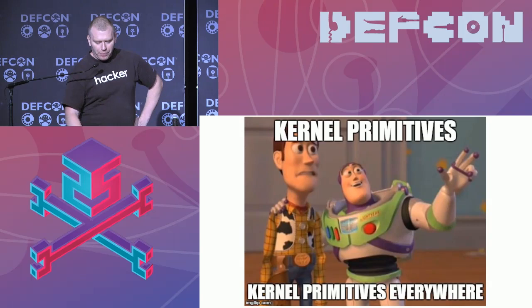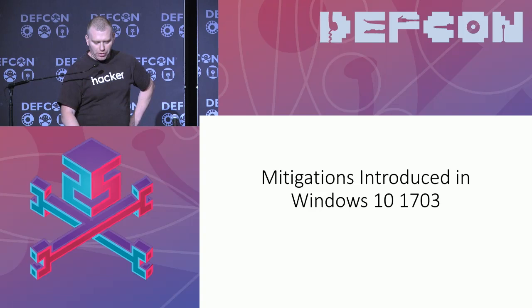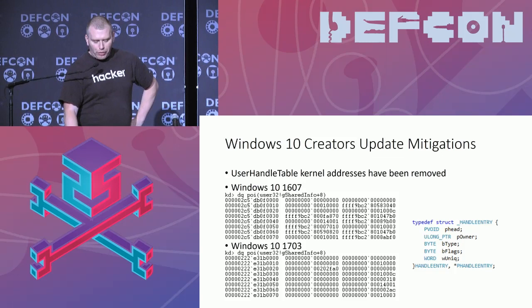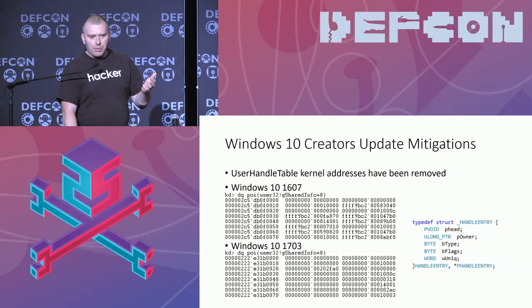That's what was put in the anniversary update. But this talk was about the Creators Update — let's see what was done there because they did additional mitigations. What we find, especially for the window object, is that the user handle table which we used to disclose addresses of the window objects has been changed. Before, we saw a lot of kernel addresses there for all the objects — they have been removed now. So we don't know where the windows are anymore.